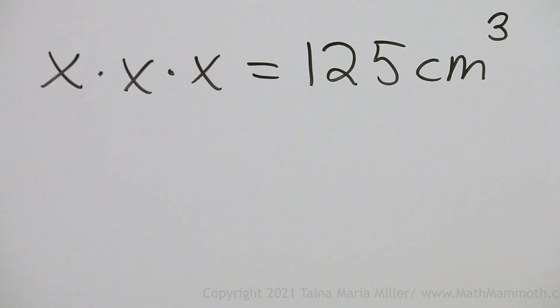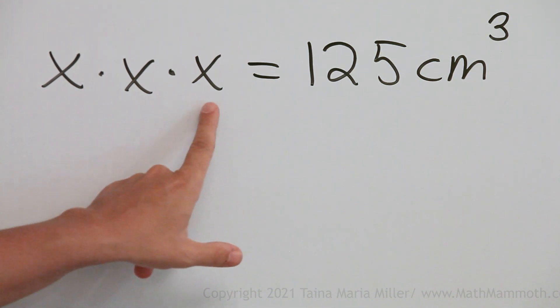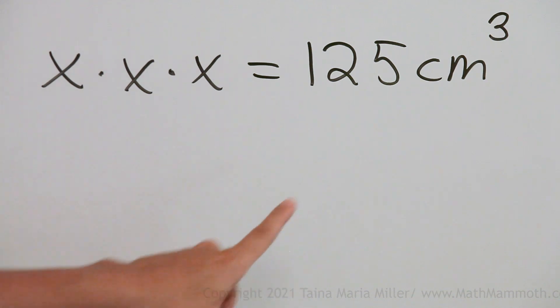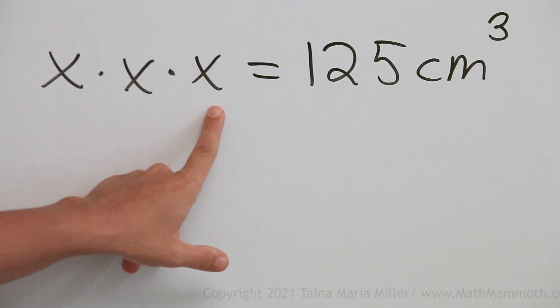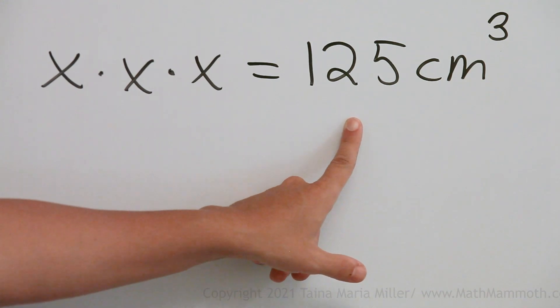Now to solve this equation, just guess and check. What number can go here? Let's write 2. 2 times 2 times 2 equals 8. 4 times 4 times 4 would be 16 times 4, 64, not quite.